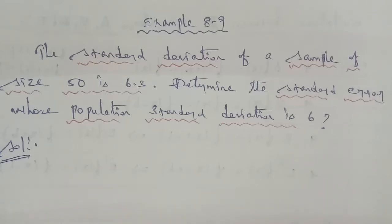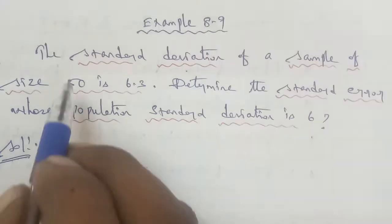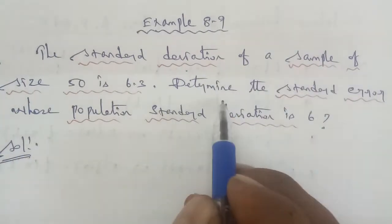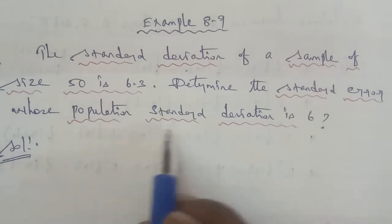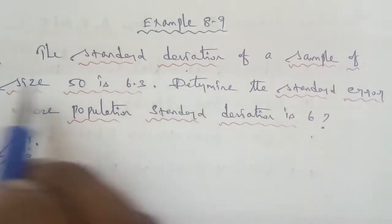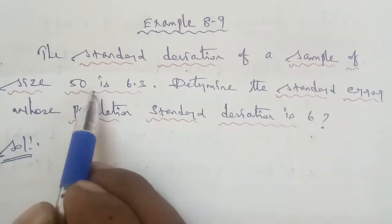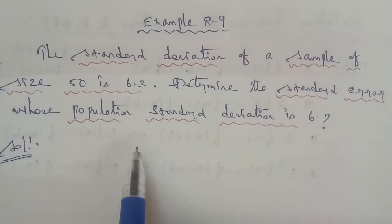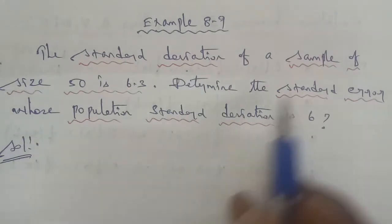Hi students, 12th business math, Example 8.9. The standard deviation of a sample of size 50 is 6.3. Determine the standard error whose population standard deviation is 6. In this question, we're given a sample size and the sample standard deviation, so carefully read and apply the formula.